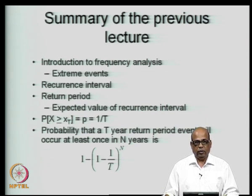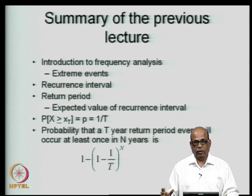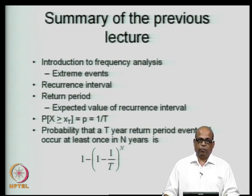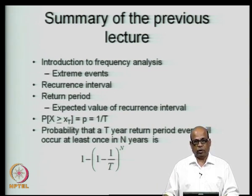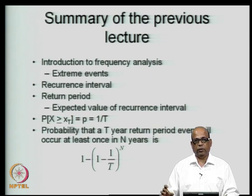We defined the recurrence interval, which is the time duration between occurrences of two extreme events of a given magnitude — for example, the flow exceeding a value of 5000 cubic meters per second. We also introduced the concept of return period, which is the expected value of the recurrence interval. When we say a return period of twenty years for a flood flow, it indicates that once in about twenty years on average we may expect such an event to occur.